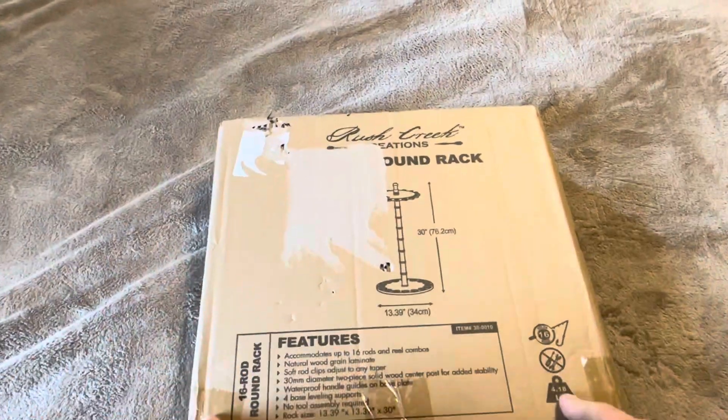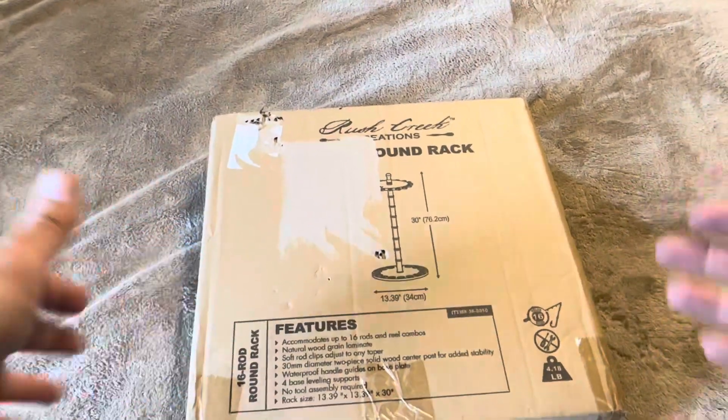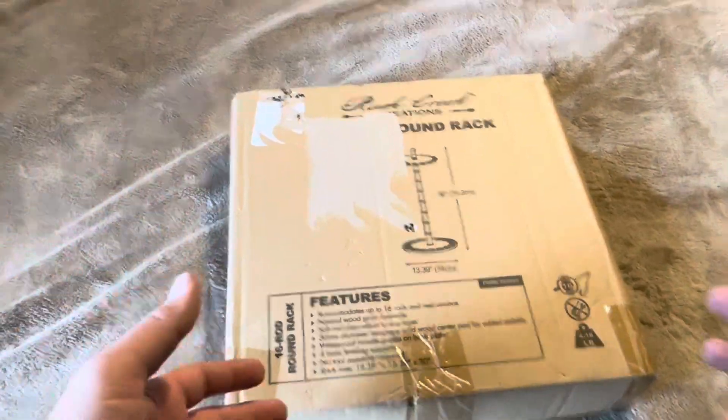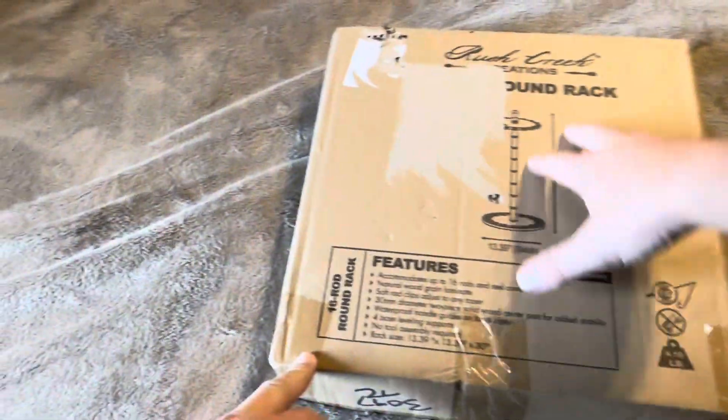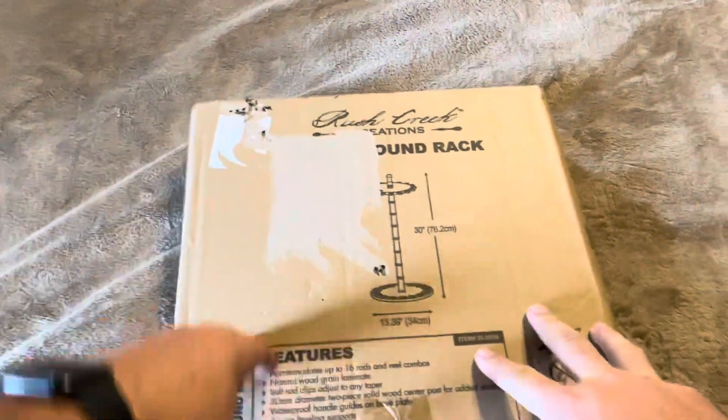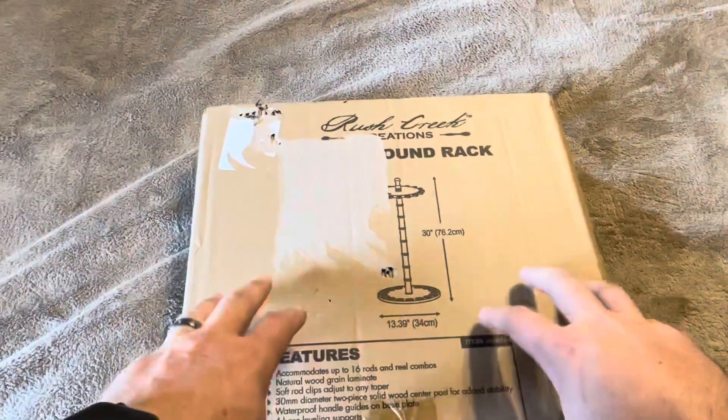Today I'm going to be reviewing this Rush Creek Creations round fishing rod and reel rack. Now as you can see here I kind of had to tear off this on the front and that is because it had the address label stuck directly onto this.